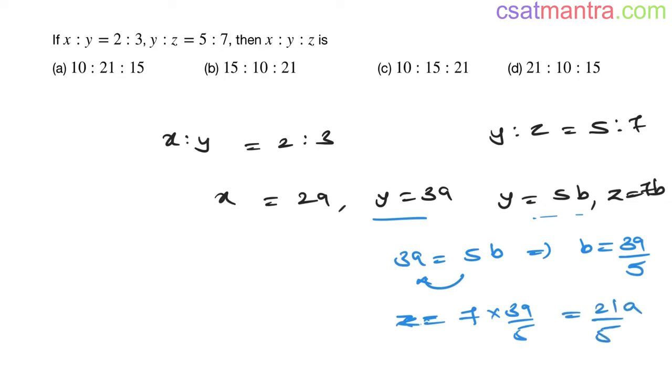Now x is 2A, y is 3A, z is 21A by 5. I wanted to cancel out this 5 in the denominator, so multiplying every term with 5. 5 into 2 is 10A, 5 into 3 is 15A, 5 into 21 by 5 - when you multiply with 5 here, 5 gets cancelled, 21A. A, A, A gets cancelled. 10 is to 15 is to 21. So answer is C.